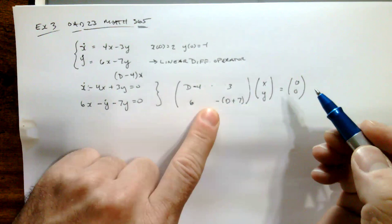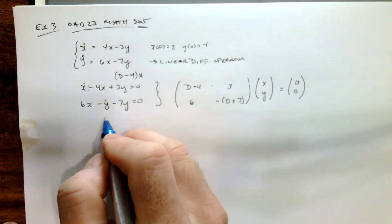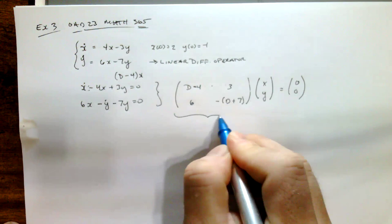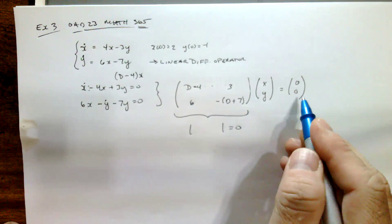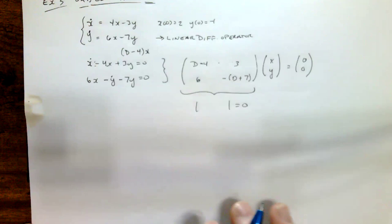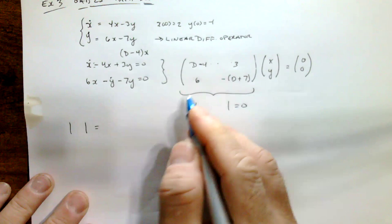For a homogeneous linear system to not have only the trivial solution, the operational determinant must be 0. In other words, the determinant of this matrix must be identically equal to 0 for the homogeneous case, otherwise we will only get the trivial solution. So we're going to force this determinant to be 0.